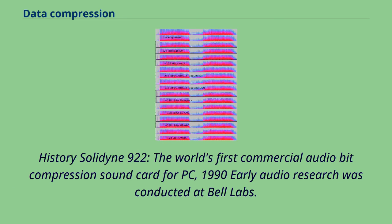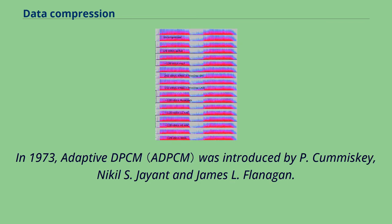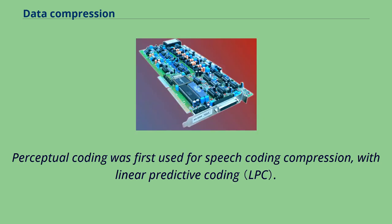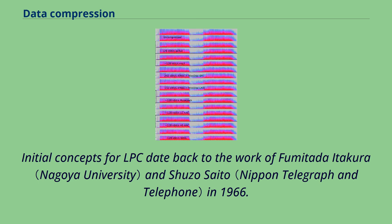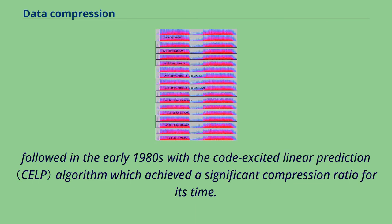Early audio research was conducted at Bell Labs. There, in 1950, C. Chapin Cutler filed the patent on differential pulse-code modulation. In 1973, adaptive DPCM was introduced by P. Cummiskey, Nikil S. Jayant, and James L. Flanagan. Perceptual coding was first used for speech coding compression with linear predictive coding. Initial concepts for LPC date back to the work of Fumitada Itakura and Shuzo Saito in 1966. During the 1970s, Vishnu S. Atal and Manfred R. Schroeder at Bell Labs developed a form of LPC called Adaptive Predictive Coding, a perceptual coding algorithm that exploited the masking properties of the human ear. This was followed in the early 1980s with the code-excited linear prediction algorithm, which achieved a significant compression ratio for its time.